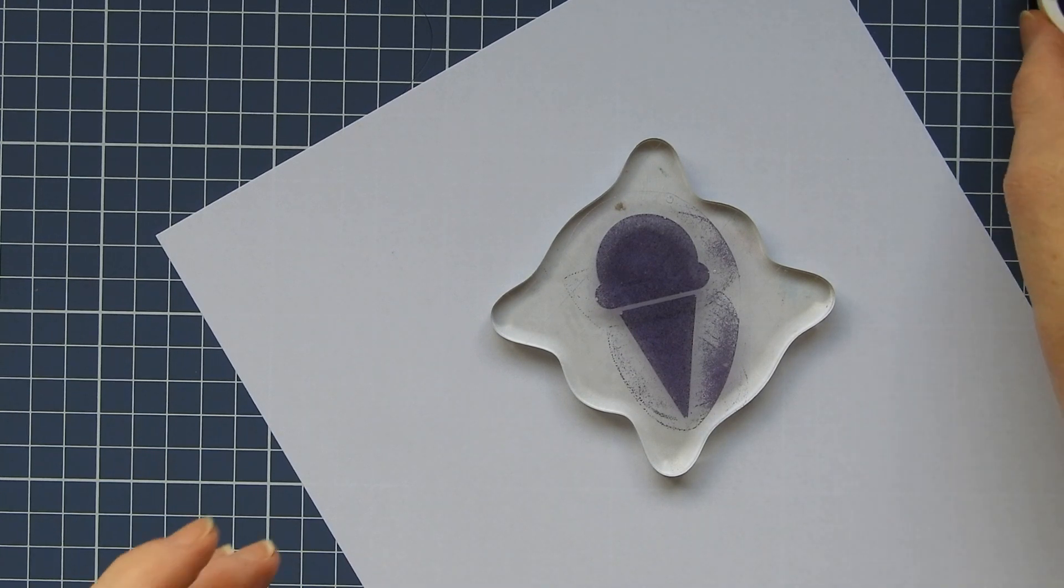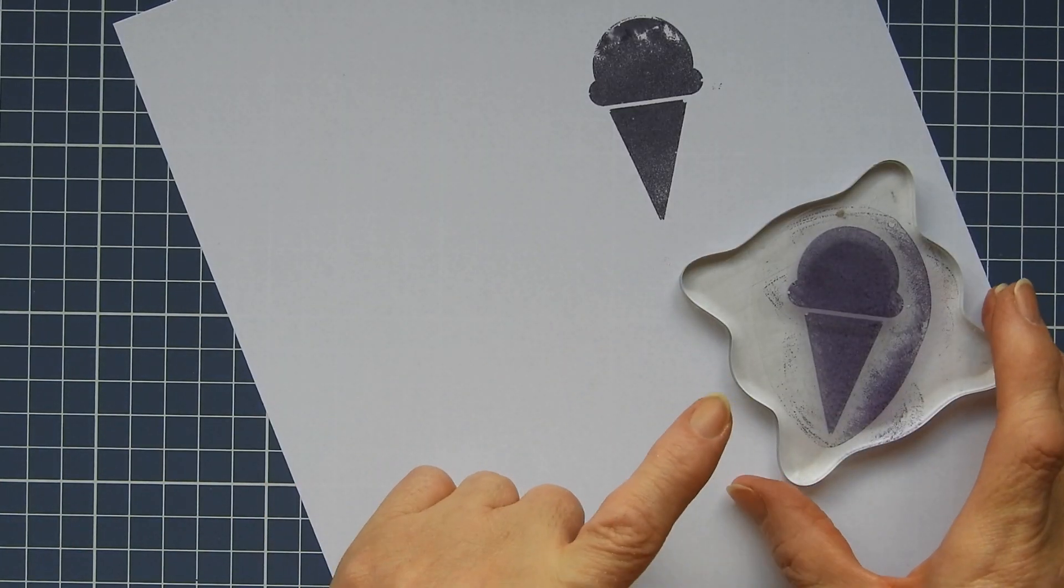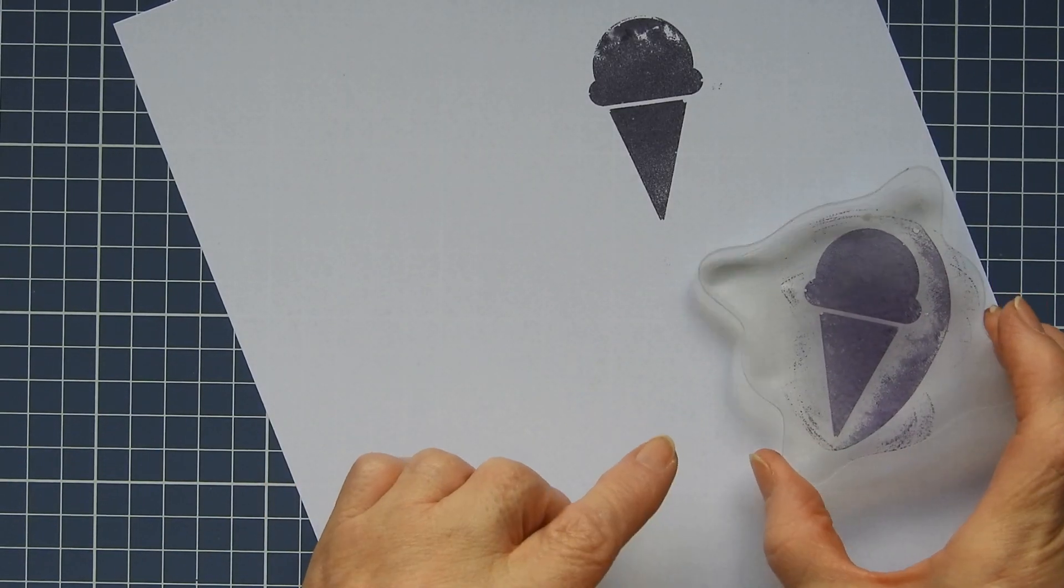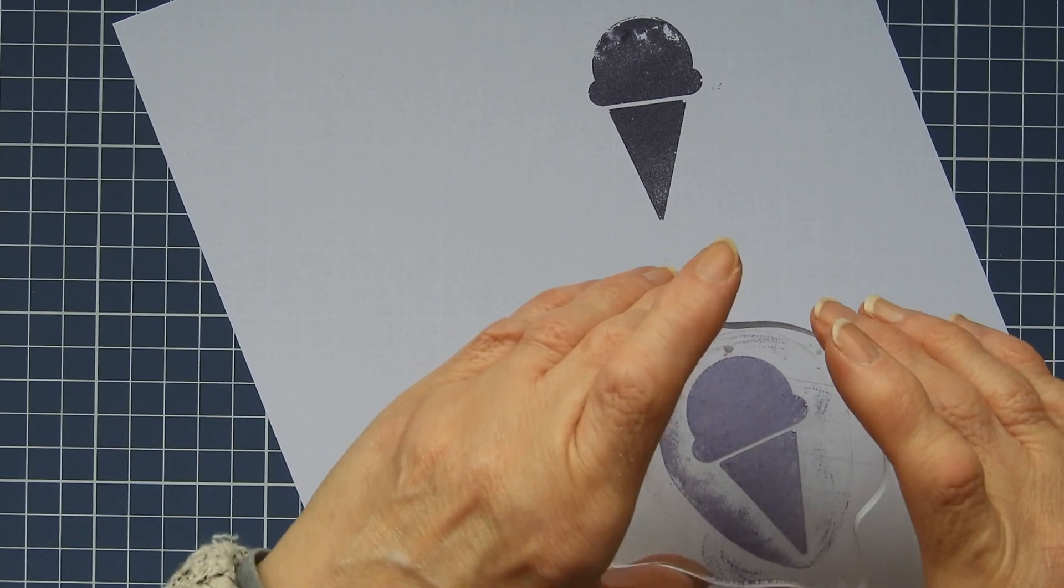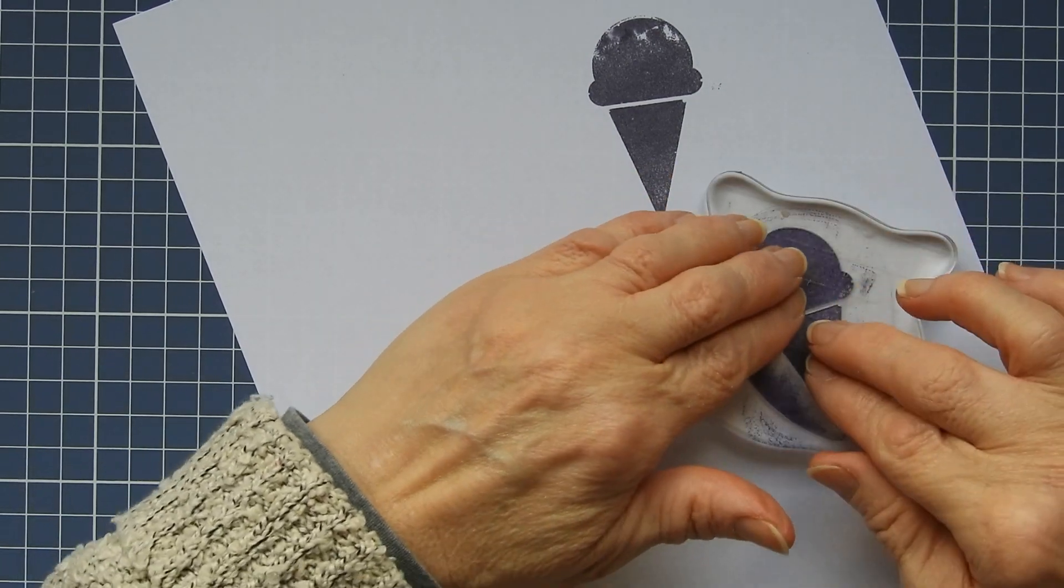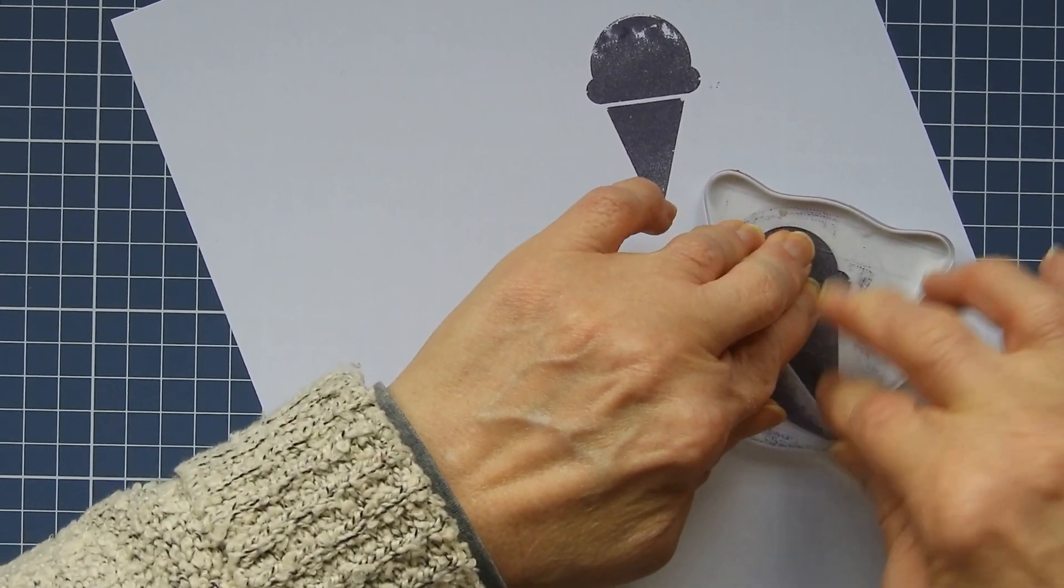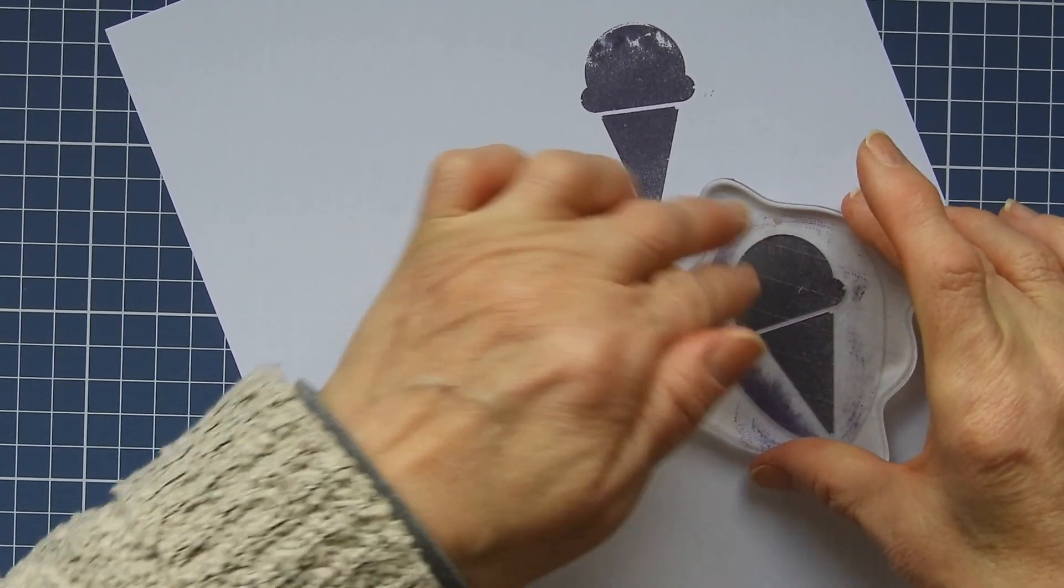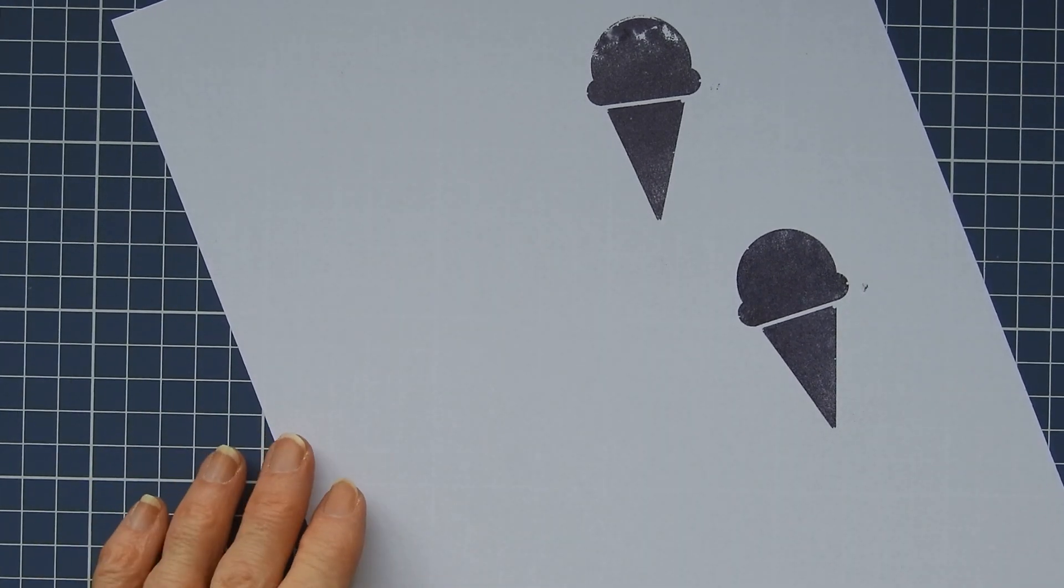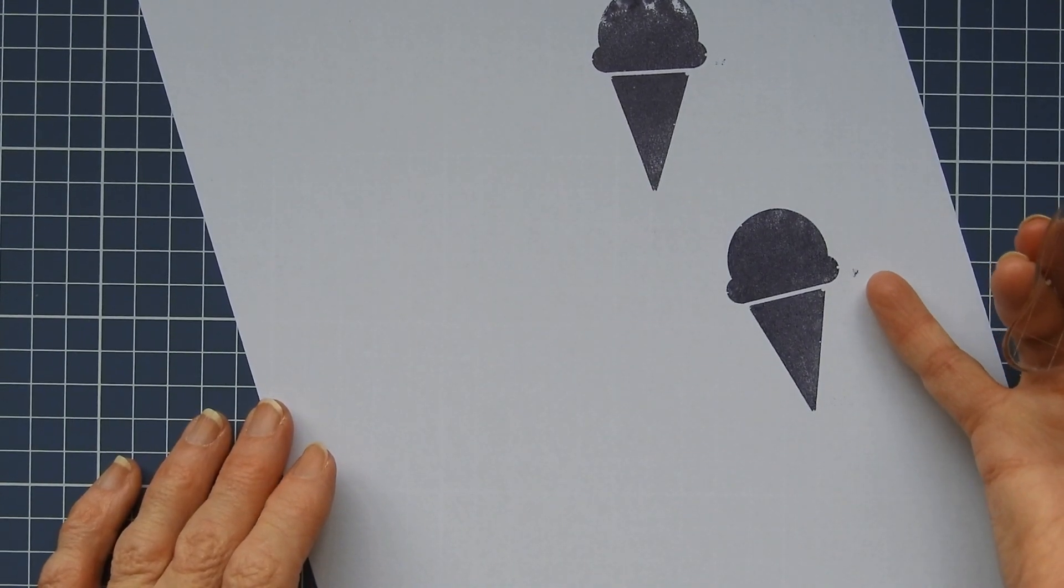If I made this stamp thicker, I could use it in a stamp positioner, which does aid stamping incredibly. But because it's a very thin one, that is not so easy to do. Hopefully this time I've got the full image - yeah, there we go.